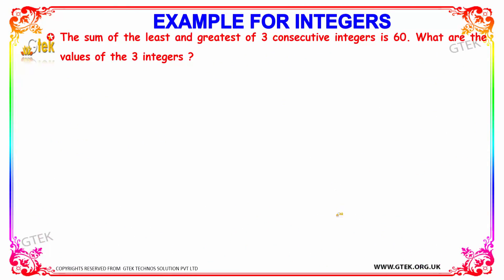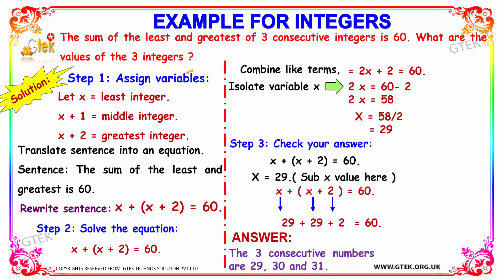Let's see an example for integers. The question is: the sum of the least and greatest of 3 consecutive integers is 60. We need to find the values of those 3 integers. As a first step, we assign variables. Let x be the least integer.